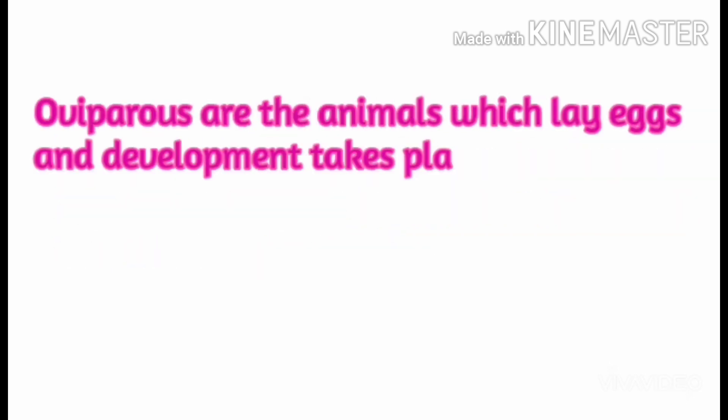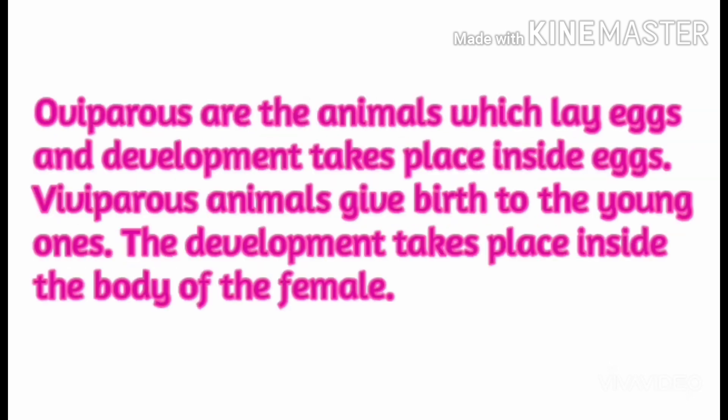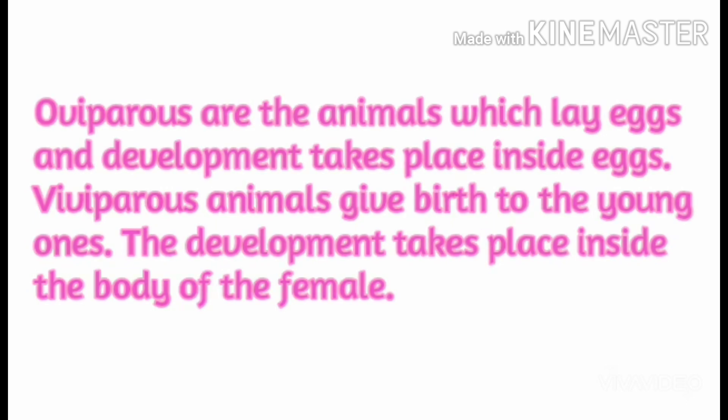Oviparous animals lay eggs and development takes place inside the egg. Viviparous animals give birth to young ones, and development takes place inside the body of the female.